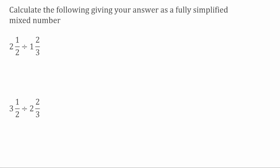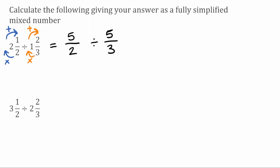We're going to convert these into improper fractions first. The denominators will still be the same — the first fraction will still be over two and the second fraction will still be over three. To find the numerator, we take the denominator of the fraction part of the mixed number and multiply it by the whole number part, then add on the numerator. So for the first example: two multiplied by two is four, add on the one gives five — so two and a half is equivalent to five over two. For the next one: three multiplied by one is three, add on the two gives five — so one and two thirds is equivalent to five over three.